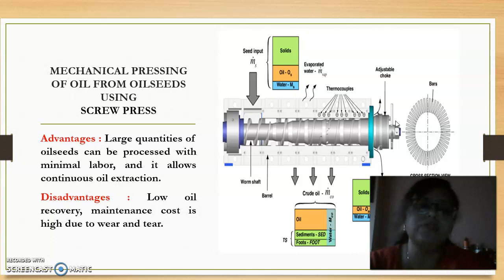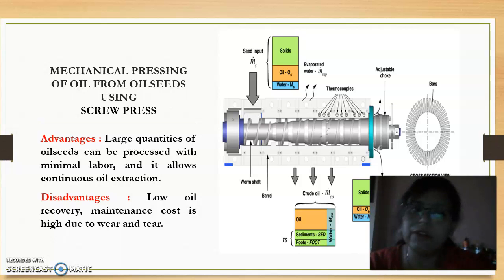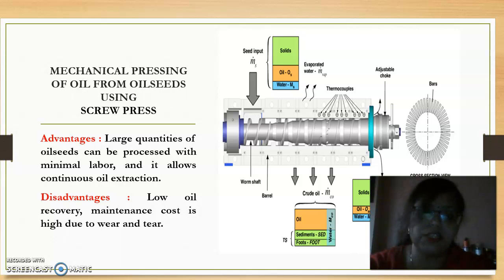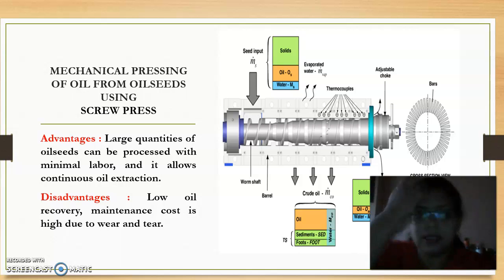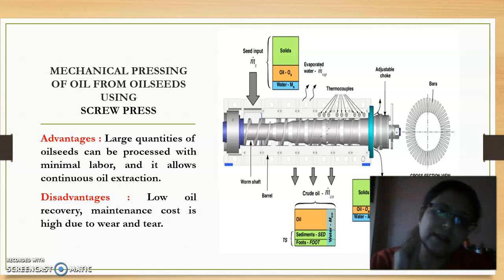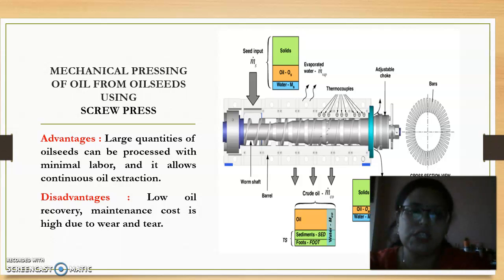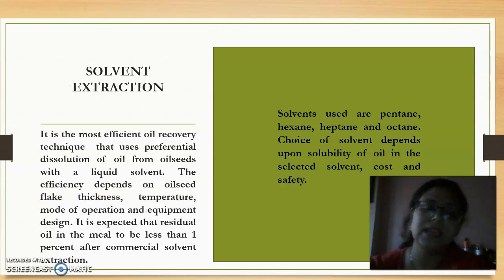The advantages of the screw press are minimum labor involvement and continuous oil extraction. However, it is applicable only for high oil-bearing seeds — this is a disadvantage. Another limitation is that the maintenance cost of this machine is high due to high wear and tear.